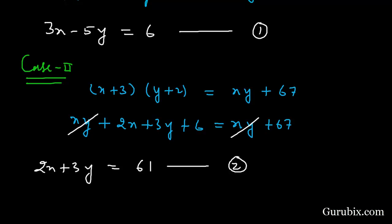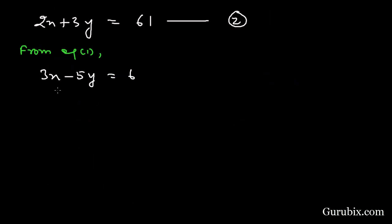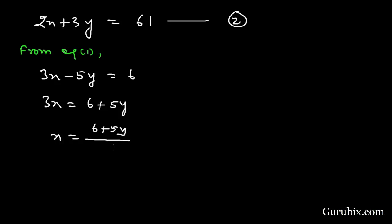Starting from equation number 1, we have 3x − 5y = 6. We write x in terms of y: 3x = 6 + 5y, therefore x = (6 + 5y) / 3. Now we shall substitute this value into equation number 2.